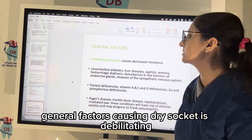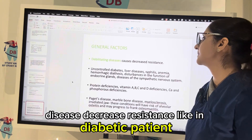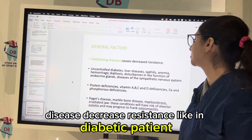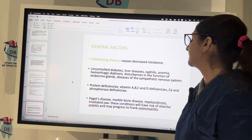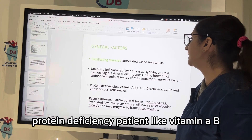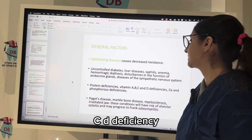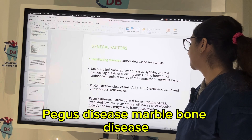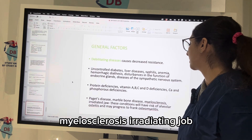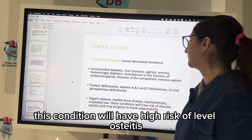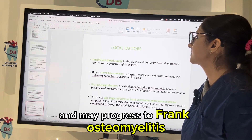General factors causing dry socket include debilitating disease, decreased resistance as in diabetic patients, anemia, liver disease, endocrine gland dysfunction, protein deficiency, and deficiency of vitamins A, B, C, and D. Paget's disease, marble bone disease, myelosclerosis, and irradiated jaw also increase risk — these conditions have a higher risk of alveolar osteitis and may progress to frank osteomyelitis.